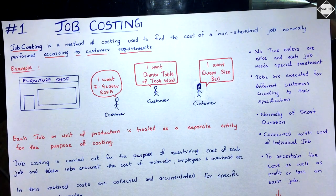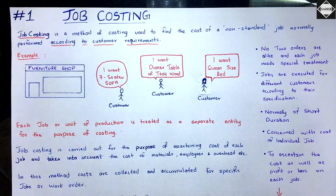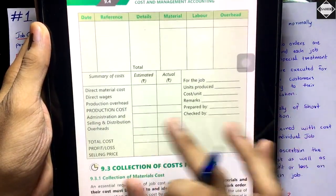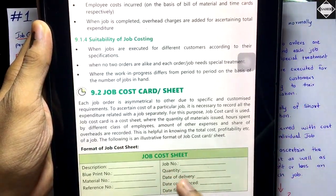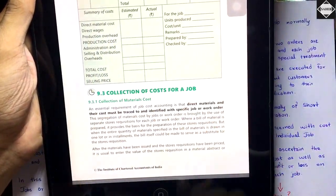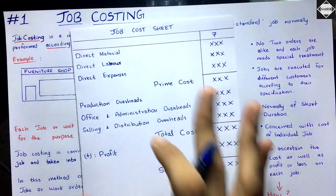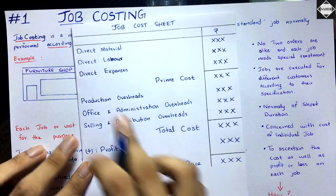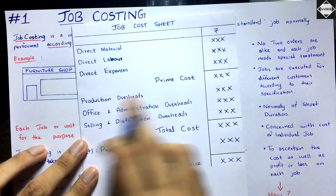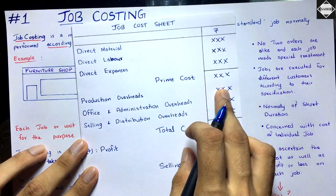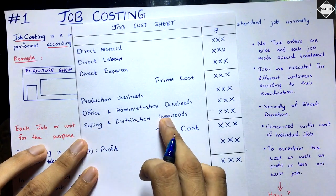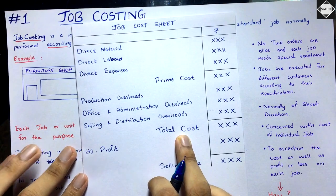Now let's look at the format. The actual full-fledged job cost sheet format is quite large, but in the exam you will only use a simplified version. It follows the same cost sheet structure: direct material, direct labor, and direct expenses give you the prime cost. Adding production overhead gives works cost or factory cost. Adding office and administration overhead gives cost of production. Adding selling and distribution overheads gives the total cost.